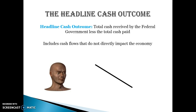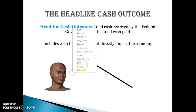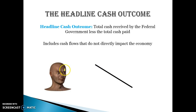The first one is the headline cash outcome. The headline cash outcome is the total cash received by the federal government, less the total cash paid. So any money they receive minus any money they pay in a given year is the cash outcome. It includes all cash flows, regardless of whether they directly impact the economy.